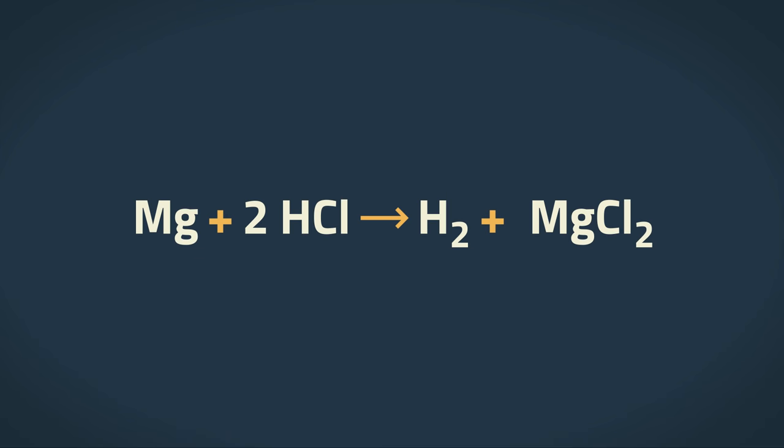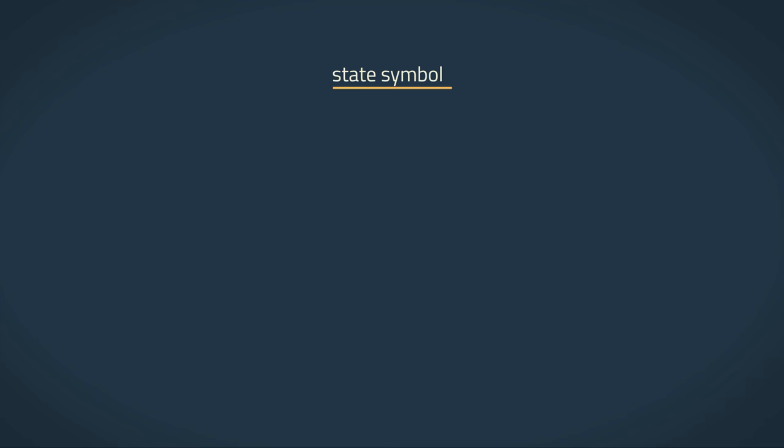Now, we are not quite done with this chemical equation. For this equation to be complete, we must also include the state symbol for each reactant and product. There are four possible states, each with their own unique state symbol.